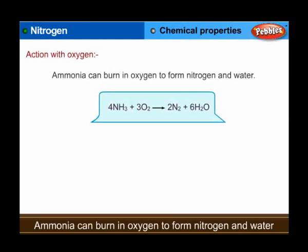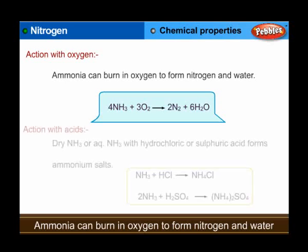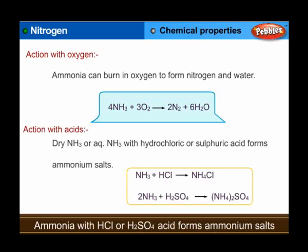Chemical properties of ammonia. Action with oxygen: ammonia burns in oxygen to form nitrogen and water — 4NH3 + 3O2 → 2N2 + 6H2O. Action with acids: dry or aqueous NH3 reacts with hydrochloric or sulfuric acid to form ammonium salts — NH3 + HCl → NH4Cl; 2NH3 + H2SO4 → (NH4)2SO4.